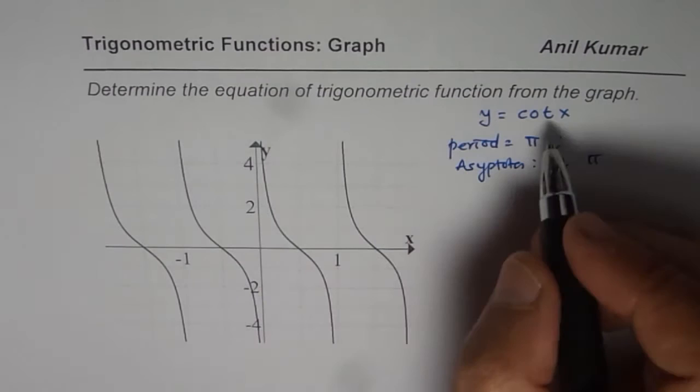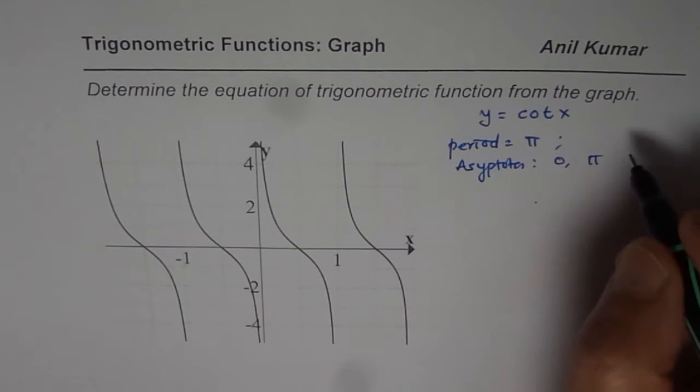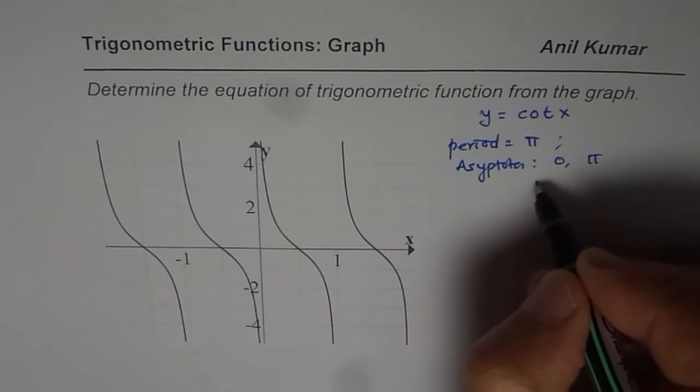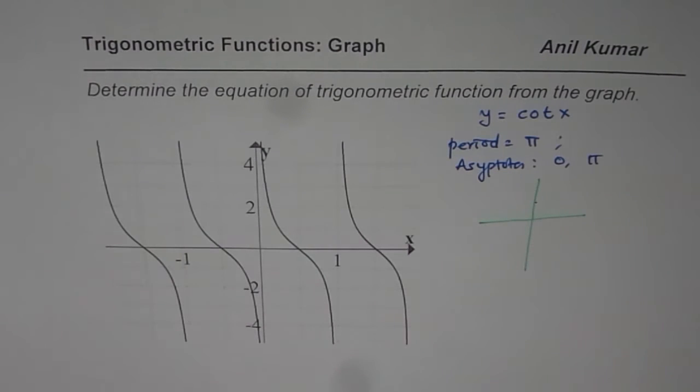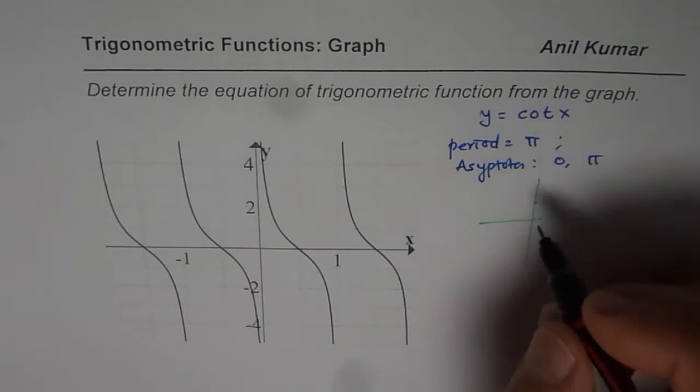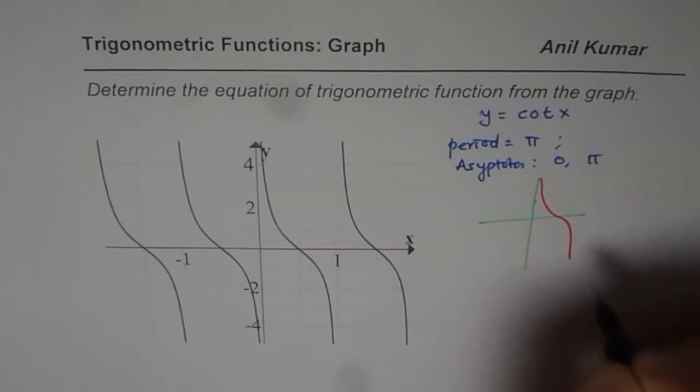The points to consider for cotangent x are, let me sketch one here and then it will be easier for us to understand the characteristics. So let me sketch one function here. What we are saying here is that the function is normally like this, like shown here in the graph.